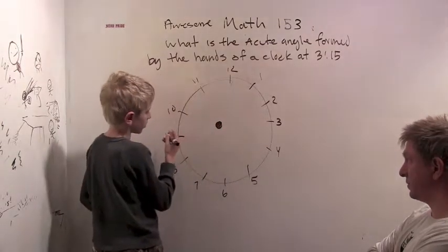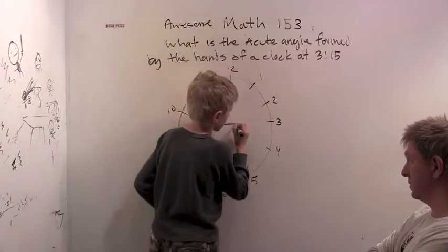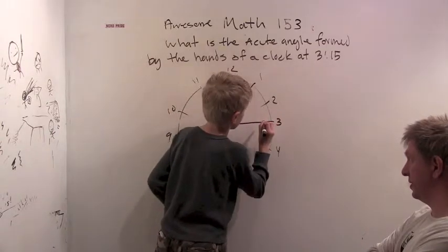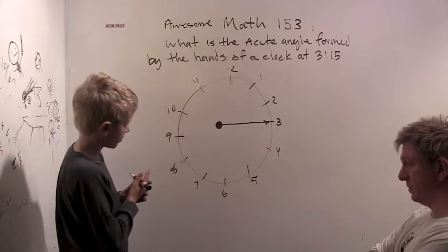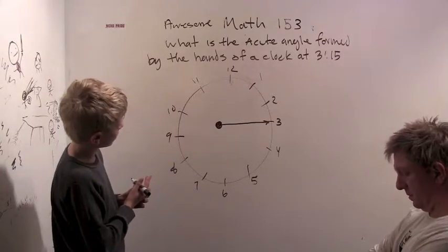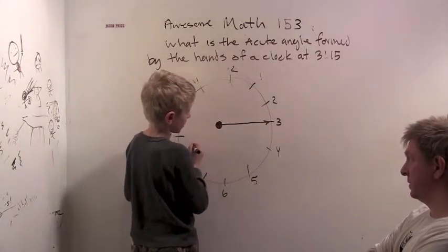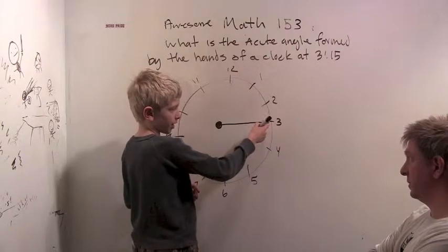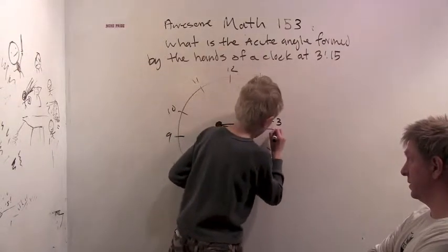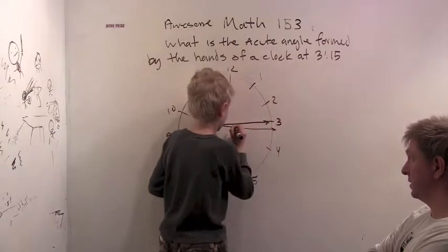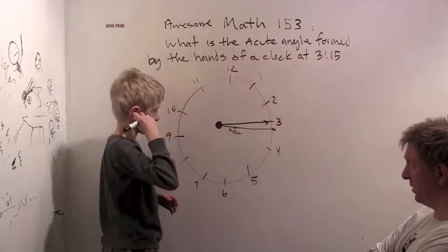So first of all, draw in where the hands of a clock will be at 3:15. This will be... I got the 15 mark. This is the minute hand. The minute hand, okay. And then for the hour hand, it's just going to be a little past. It's about here for the hour hand. Okay, there's the hour hand.